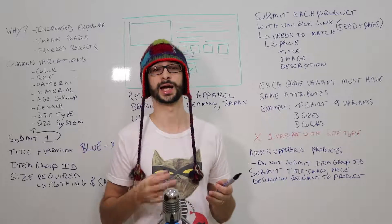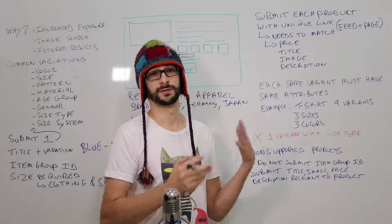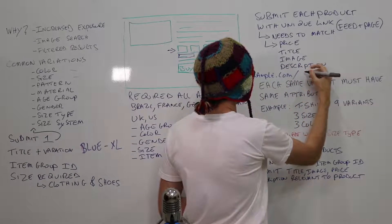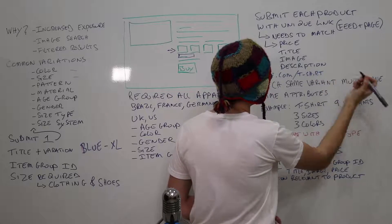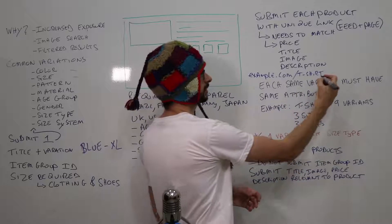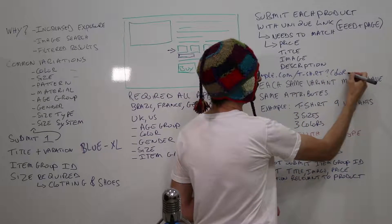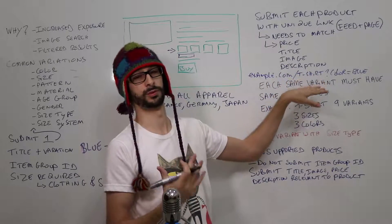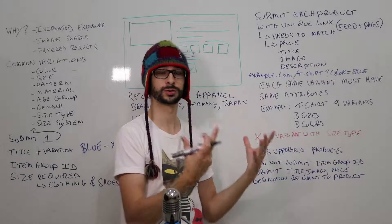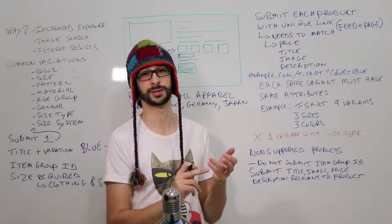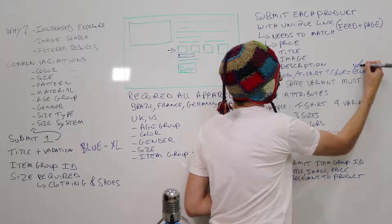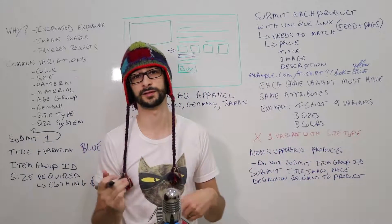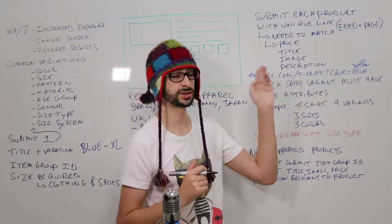To keep it simple: if you have a t-shirt in yellow and one in blue, the link needs to go to, for example, example.com/t-shirt, and then you can work with your web developer to assign a query string that defines the color — for example, color=blue. On the server side, it will detect the blue color and change all the images, pricing, and title on the landing page accordingly. If the yellow one is $9.95 and the blue one is $10.95, you can handle that difference with the link.